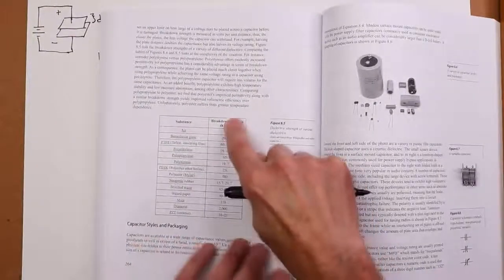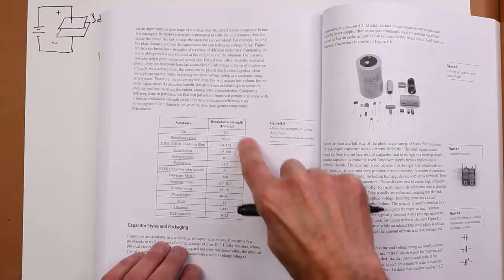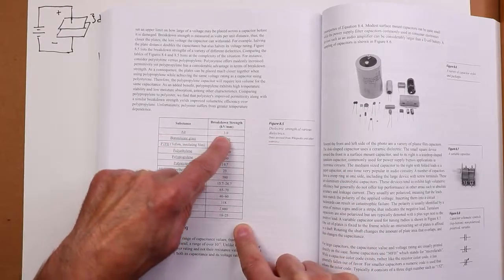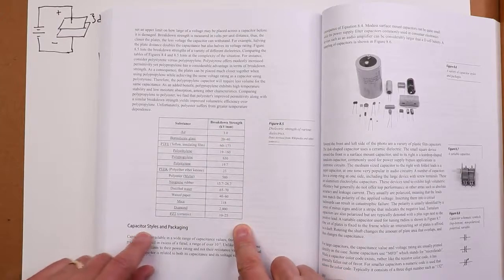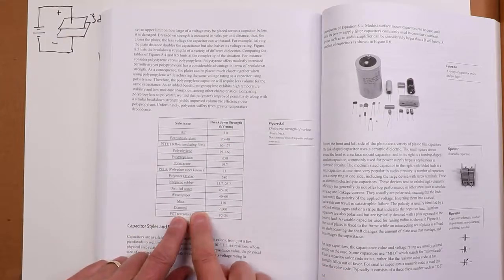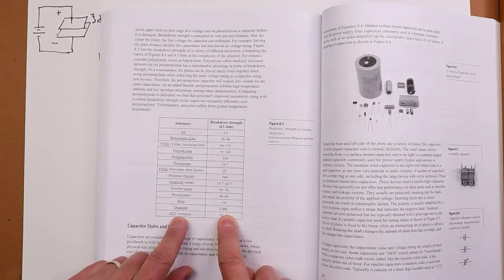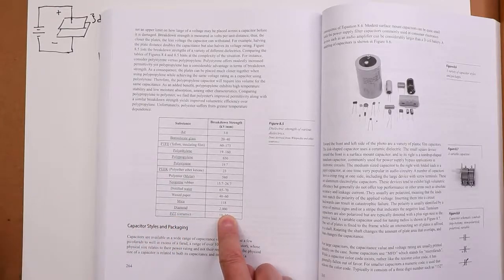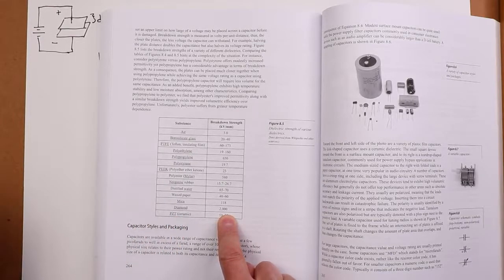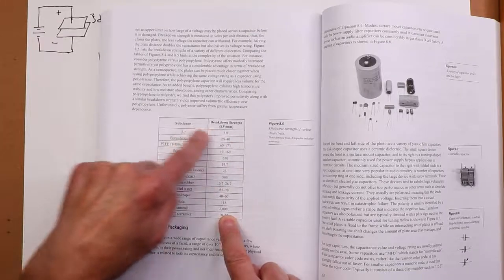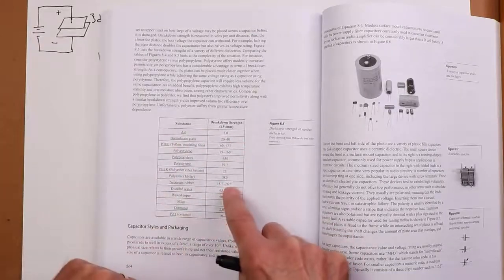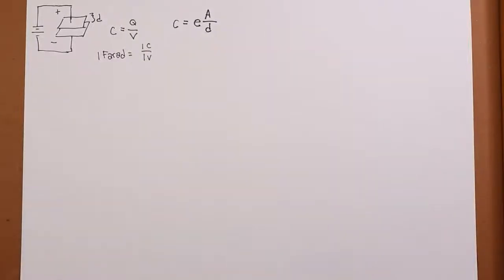So here's another little table. We can find out what the breakdown strength is, kilovolts per millimeter. So for air it's 3,000 volts per millimeter. For mica it's 118. For diamond it's 2,000 kilovolts per millimeter. Now you can guess that diamond dielectrics are kind of expensive. But there's going to be a trade-off here.